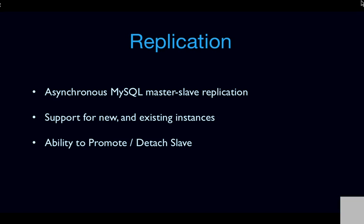In Juno we also added support for replication for MySQL, in the form of asynchronous MySQL master-slave replication on creation. When you create your new Trove instance, you can specify that another Trove instance — newly created or existing — should be set up as a master, and this new instance should be set up as a slave. Once you make that API call, Trove will take care of creating the replication account and setting up replication between the master and the slave.